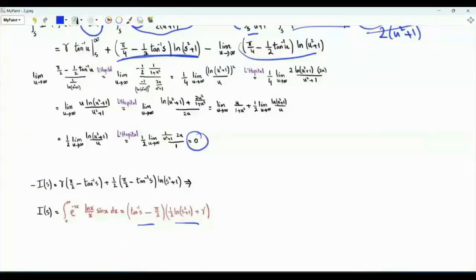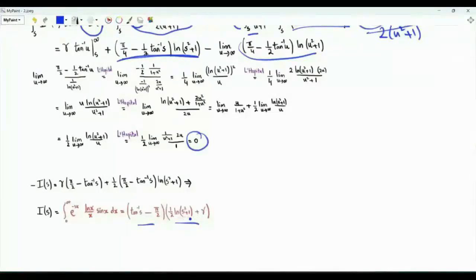What we have obtained is minus I(s). Multiplying by minus 1, I(s) — the integral from 0 to infinity of e^(-sx) ln(x) sin(x) over x — is the product of two brackets: (arctan(s) minus π/2), which can be written as minus arccot(s), times (gamma plus (1/2)ln(s²+1)).